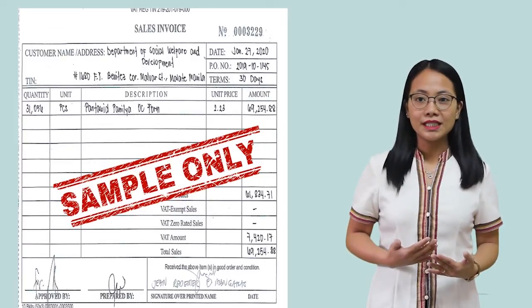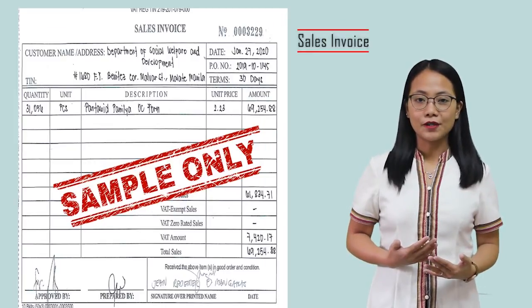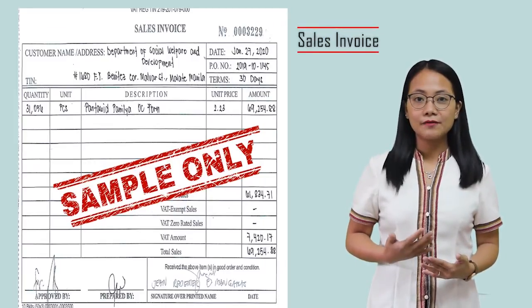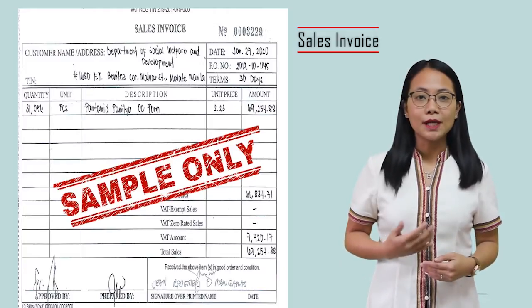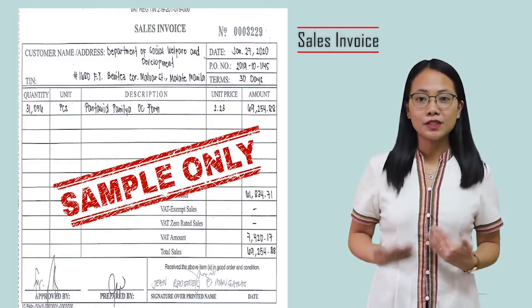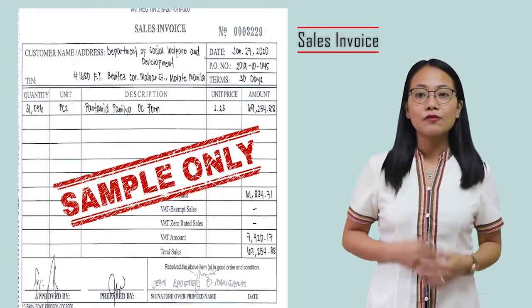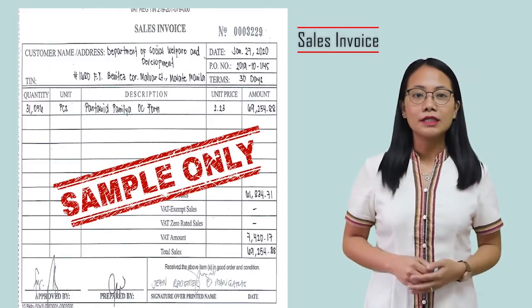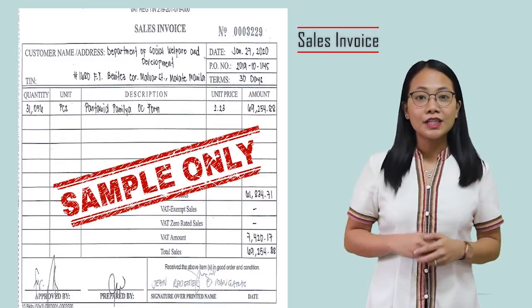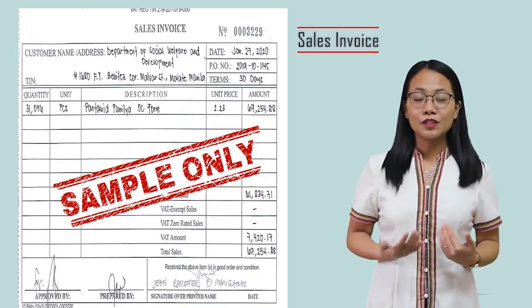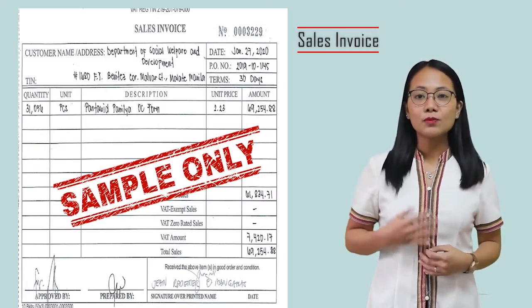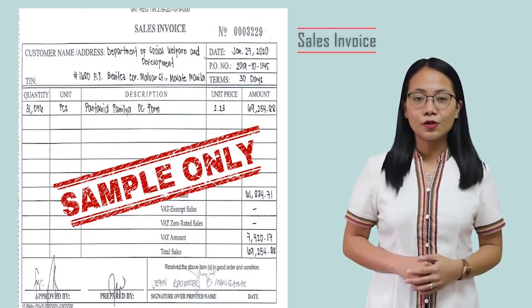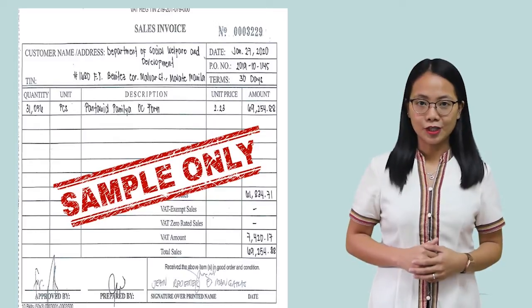Another requirement is the Sales Invoice and Delivery Receipt. This document is used to request payment from the buyer for the delivered goods of the supplier. We also need one copy of this document as an attachment.